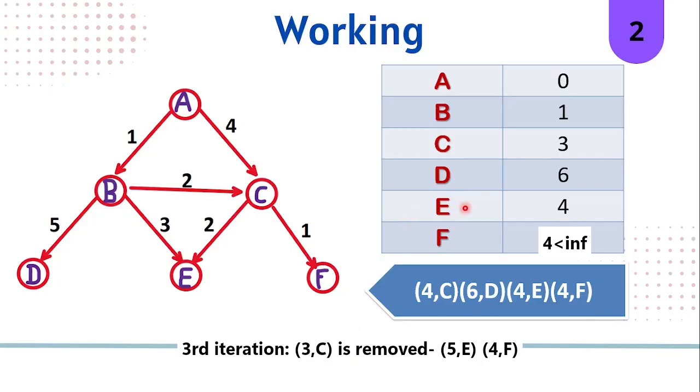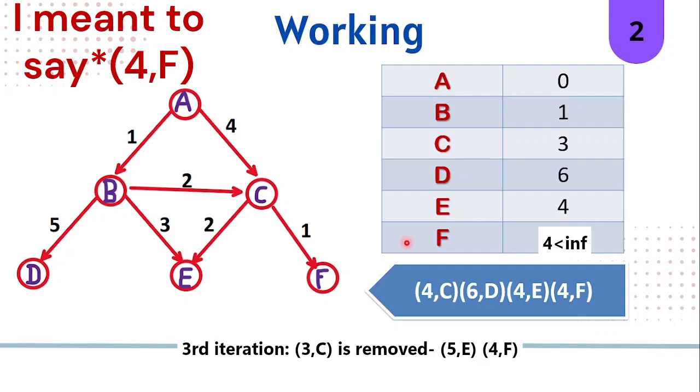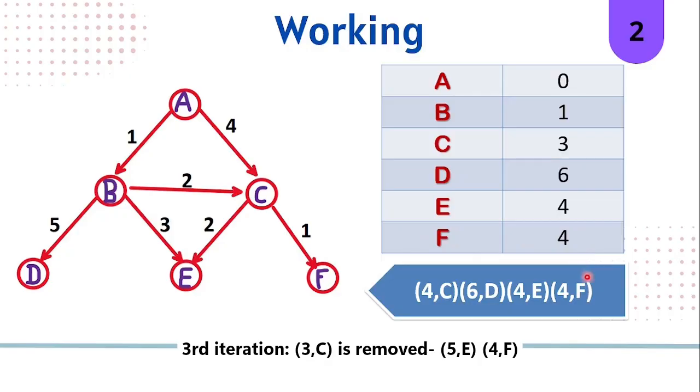We'll compare 5E to that of the table. Since 4 is already less than 5, no updation of E is needed in the table. Because of this, 5E will be discarded and not be added in the priority queue. The 4F that we got is useful for us, so an updation of F in the table and addition of 4F in the priority queue takes place.